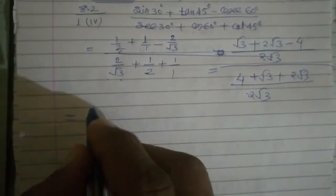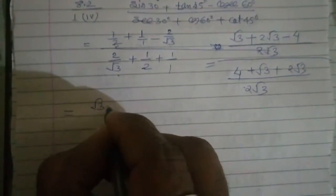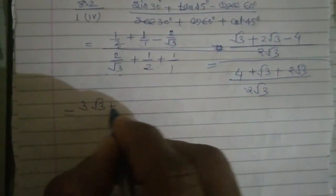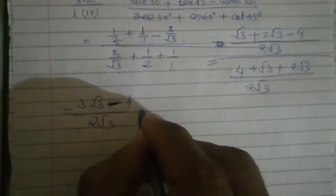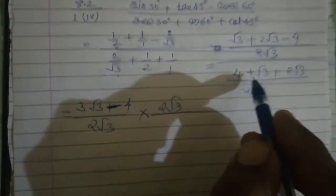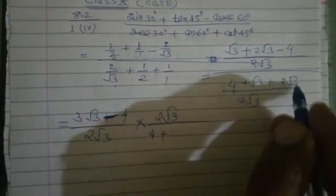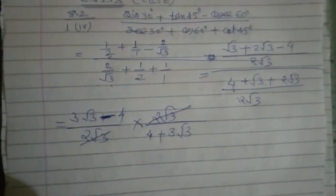अब हमारे पास क्या होगा? इसको reciprocal करें तो क्या होगा — root 3. Plus 2 root 3 और root 3 कितना होगा? 3 root 3. Minus... upon 2 root 3. Into — 2 root 3 ऊपर आएगा। Reciprocal में यह होता है। And 4 plus 1 — root 3 और 2 root 3 — 3 root 3. 2 root 3 से 2 root 3 कट गया।